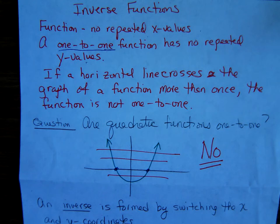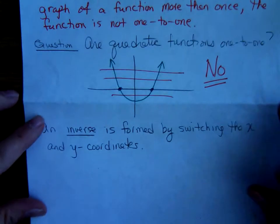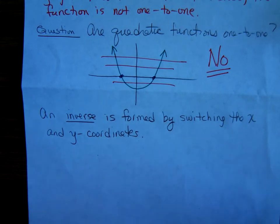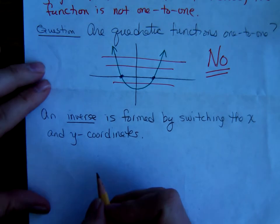Are quadratic functions one-to-one? Well, no. We said an inverse is formed by switching the x and y coordinates. The way we connect inverses and one-to-one is like this.